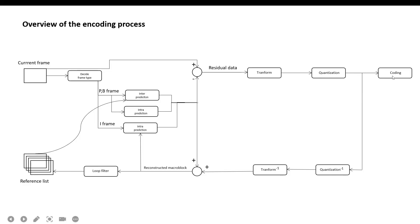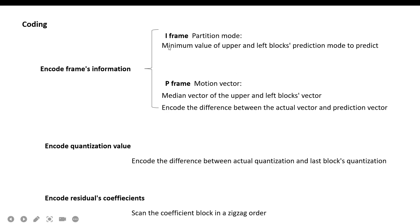After transform and quantization, coding is needed. First, it encodes frame information like partition mode and quantization value, but not directly — it uses prediction to reduce the bits. For I-frames with three partition modes, it predicts using the minimum value of the upper and left block partition mode; if they match, the mode does not need to be encoded. For P-frames, the prediction vector is the median vector of the upper and left block vectors, and only the difference between the actual vector and the prediction vector is encoded. For quantization values, only the difference between the actual quantization and the last block quantization is encoded.